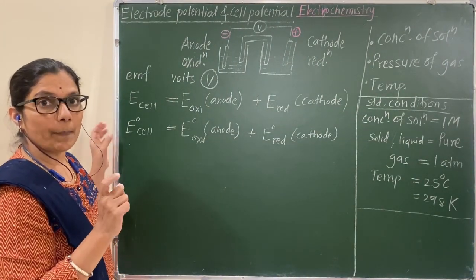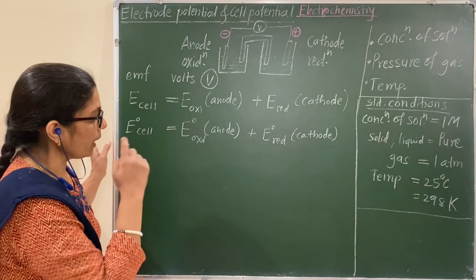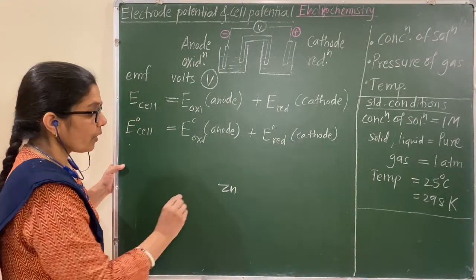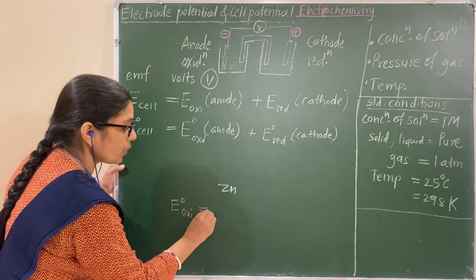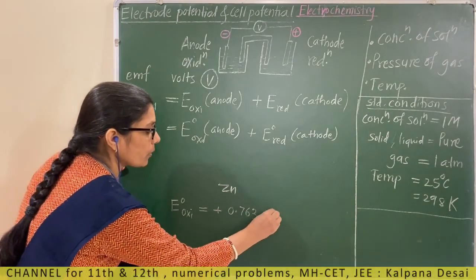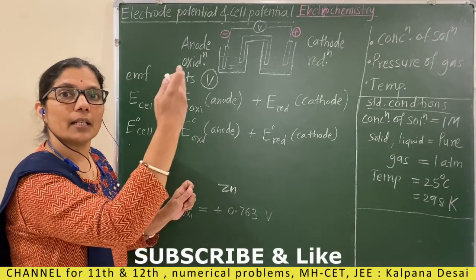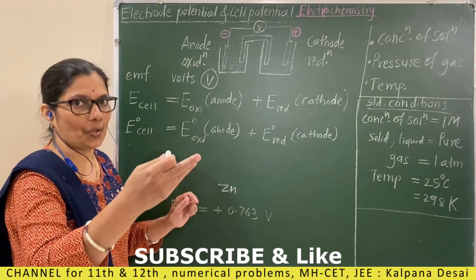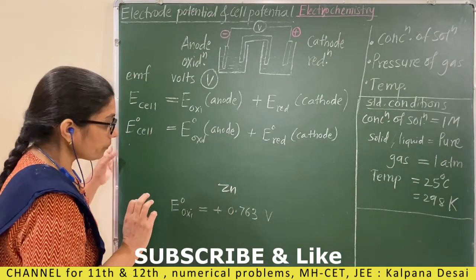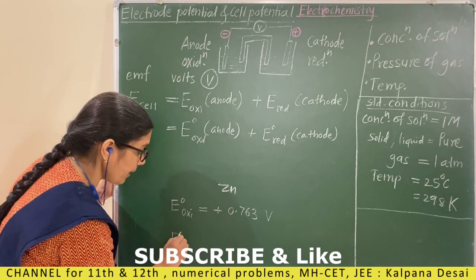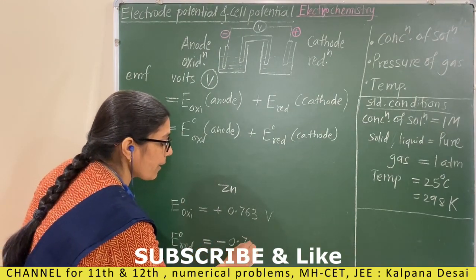Consider one electrode — for example, the zinc electrode. Zinc metal is in contact with zinc²⁺ ions, as you studied in the Daniel cell. Its standard oxidation potential is equal to +0.763 volts. This is determined with respect to the standard hydrogen electrode, which I will explain in the next session.